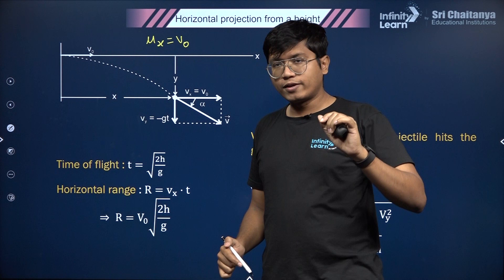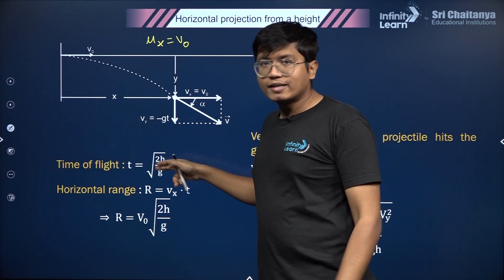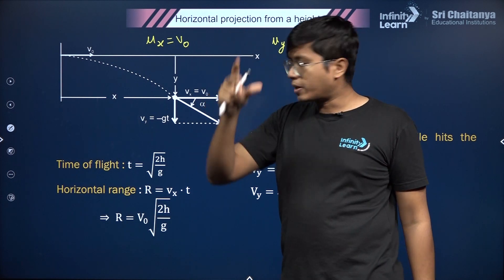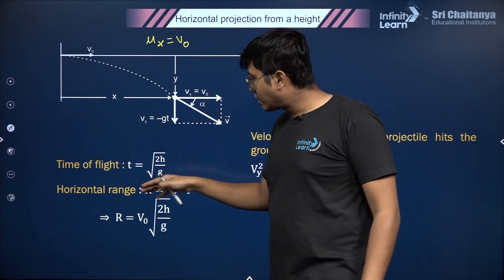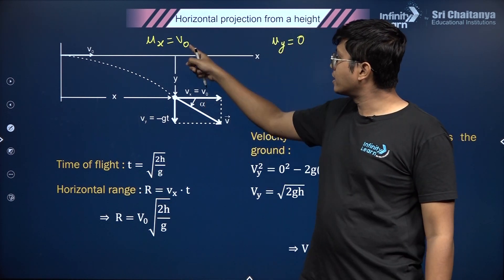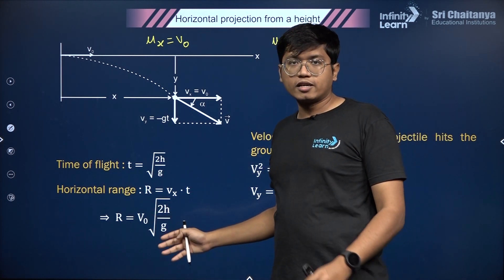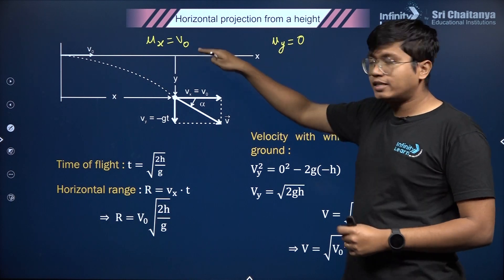You'll get the time of flight—same relation as the time of flight for a free fall drop from a height h. And horizontal range would just be then the velocity vₓ × t, which is just v₀. Put this t in here.